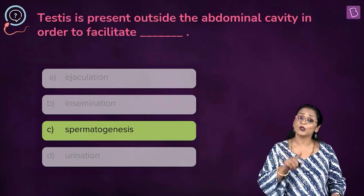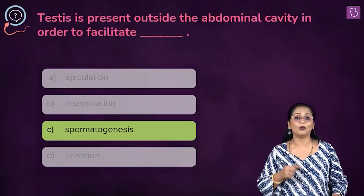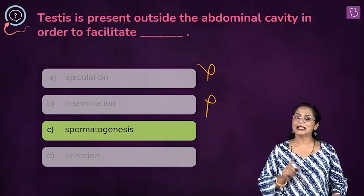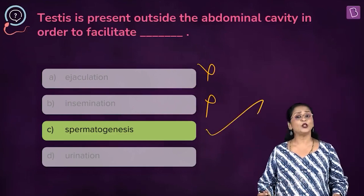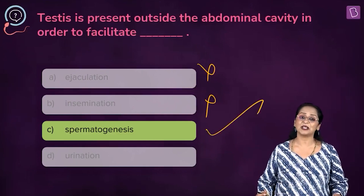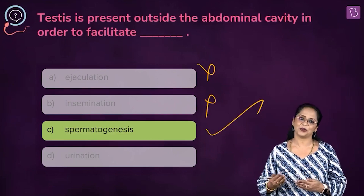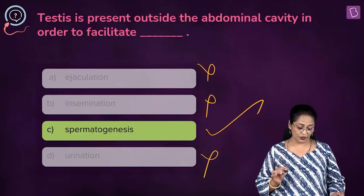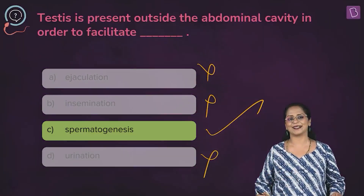Insemination is the transfer of sperms into the reproductive tract of the female. So A and B are incorrect. C, spermatogenesis, is correct. D, urination, is the process of releasing urine — also incorrect. So A, B, and D are incorrect. C is the right option.